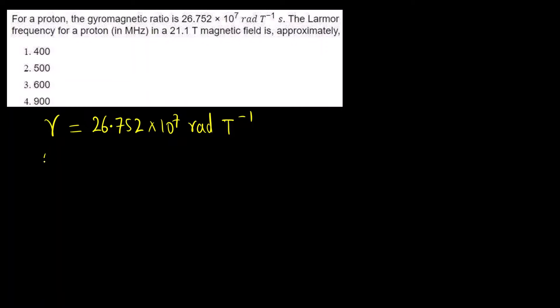Larmor frequency that is represented by omega, this we have to calculate. And what else is given? External magnetic field B naught is given that is 21.1 Tesla.